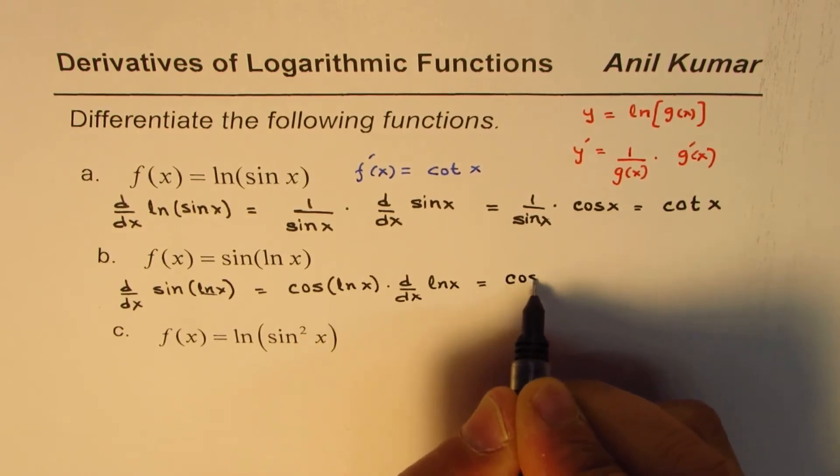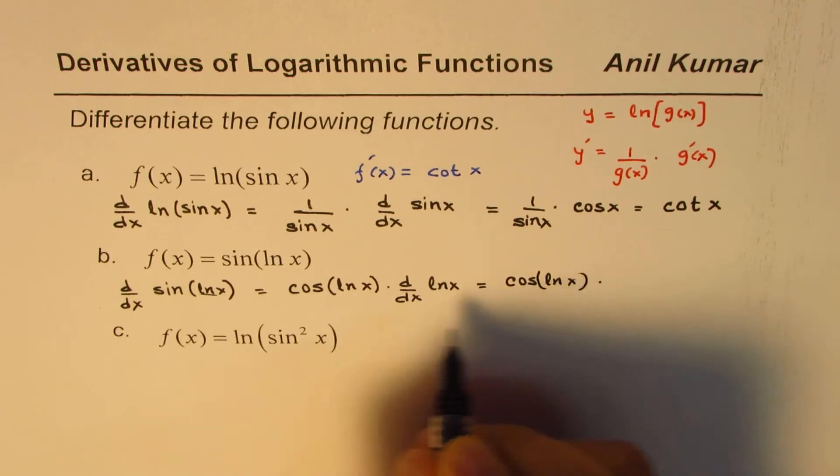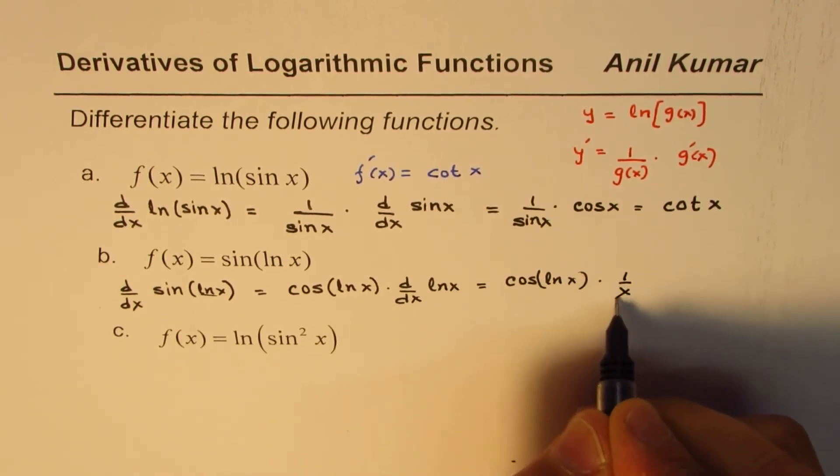So that gives you cos ln x times derivative of ln x is 1 over x.